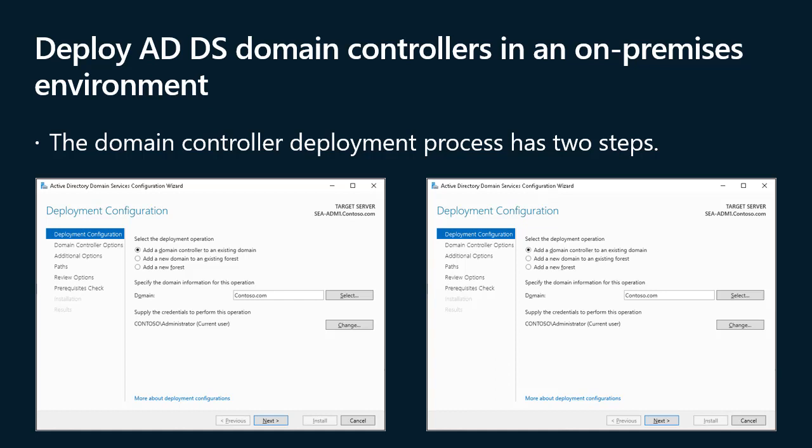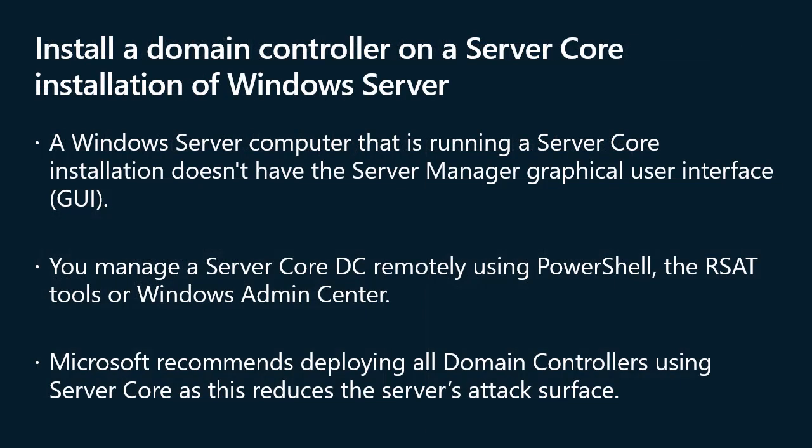Domain controllers should always run the most recent version of Windows Server. A Windows Server computer running a server core installation doesn't have the Server Manager GUI. Therefore, you must use alternative methods to install the domain controller role, such as Windows Admin Center, Server Manager, Windows PowerShell, or Remote Server Administration Tools (RSAT) installed on a supported Windows Server with desktop experience or any supported Windows client such as Windows 11. You manage a server core DC remotely using PowerShell, the RSAT tools, or Windows Admin Center.